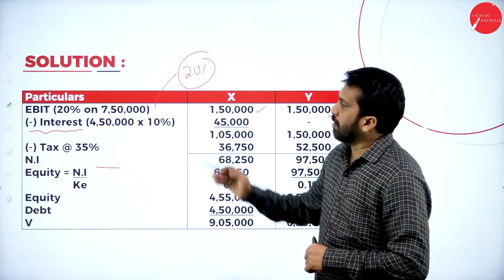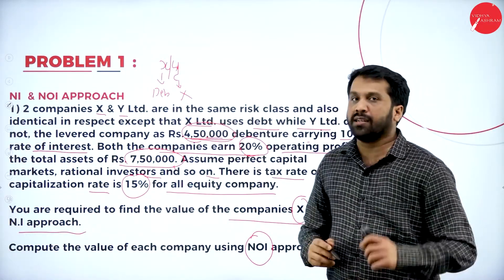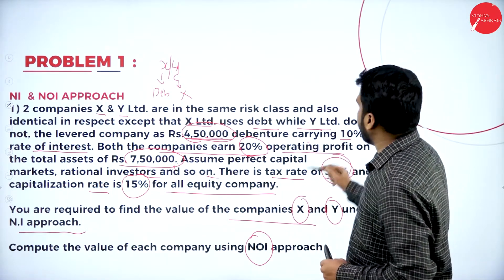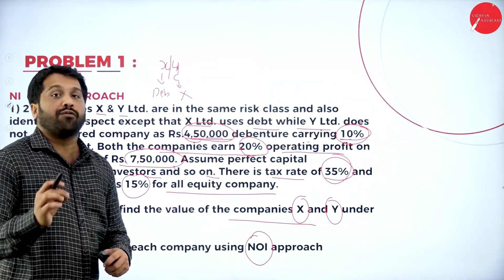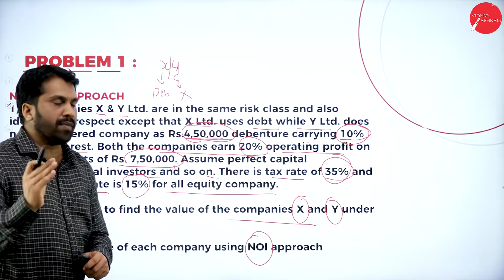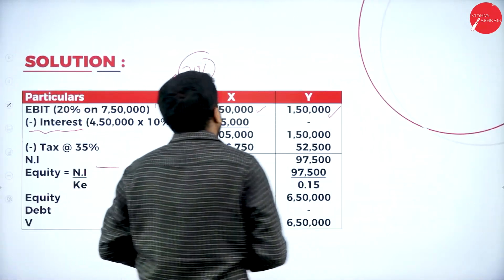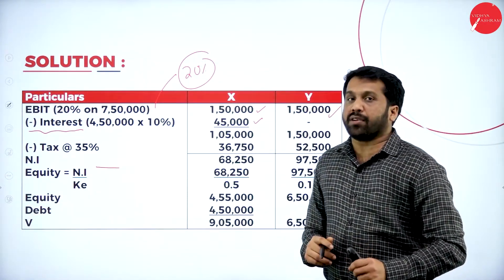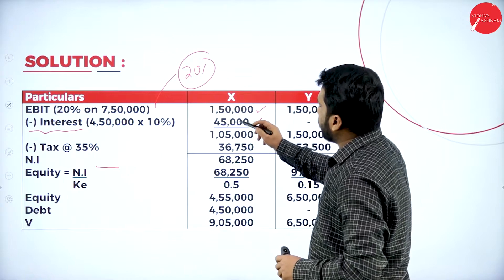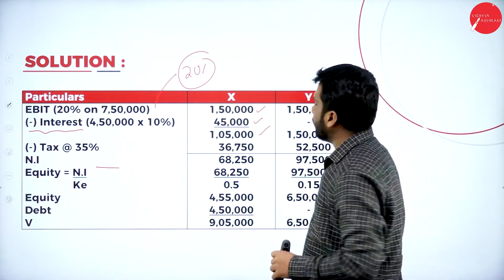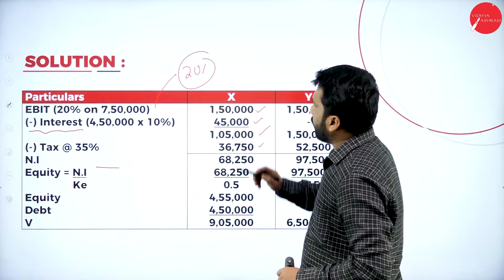Interest is calculated on X's debenture value of 4,50,000 at 10 percent: 4,50,000 × 10% = 45,000. This applies only to X, not Y, because debentures are applicable only for X. So for X: 1,50,000 − 45,000 = 1,05,000 (EBT). For Y, EBT remains 1,50,000.